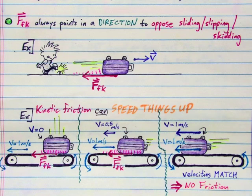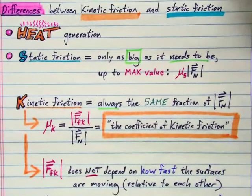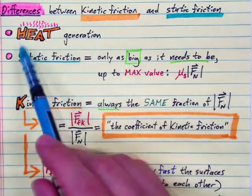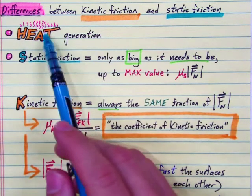That brings us to the differences between kinetic and static friction. Three differences. First being what we've already pointed out, heat generation. When surfaces rub against each other, they convert some of the energy that's present into heat.